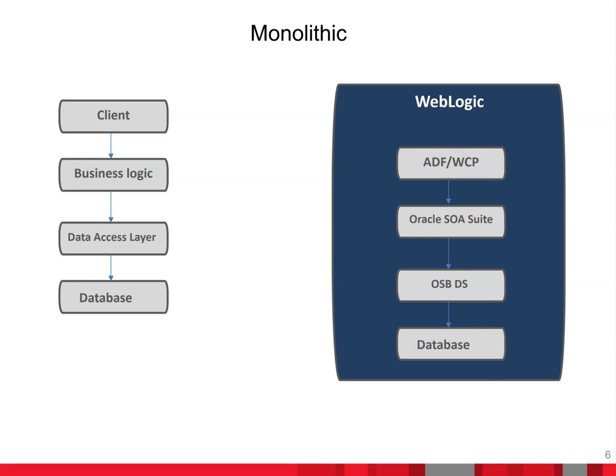In a monolithic application you typically have a client, business logic, data access layer, and the database. If you compare with the Oracle Fusion model, everything runs in WebLogic — we have ADF and WebCenter Portal for the UI, Oracle Service Suite, and OSB data services for the data access layer. It typically contains all the business logic — UI, data services, business processes, orchestration — all deployed together in WebLogic.